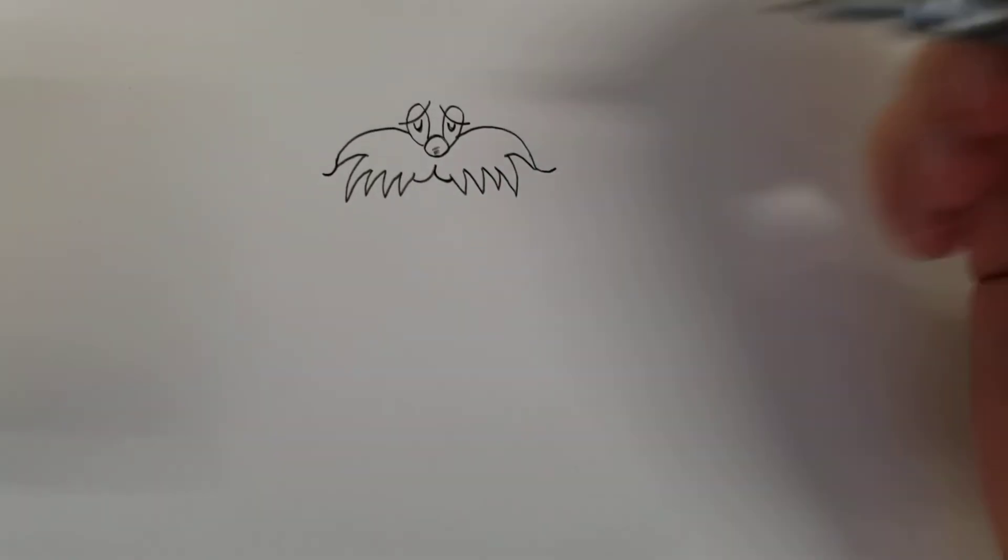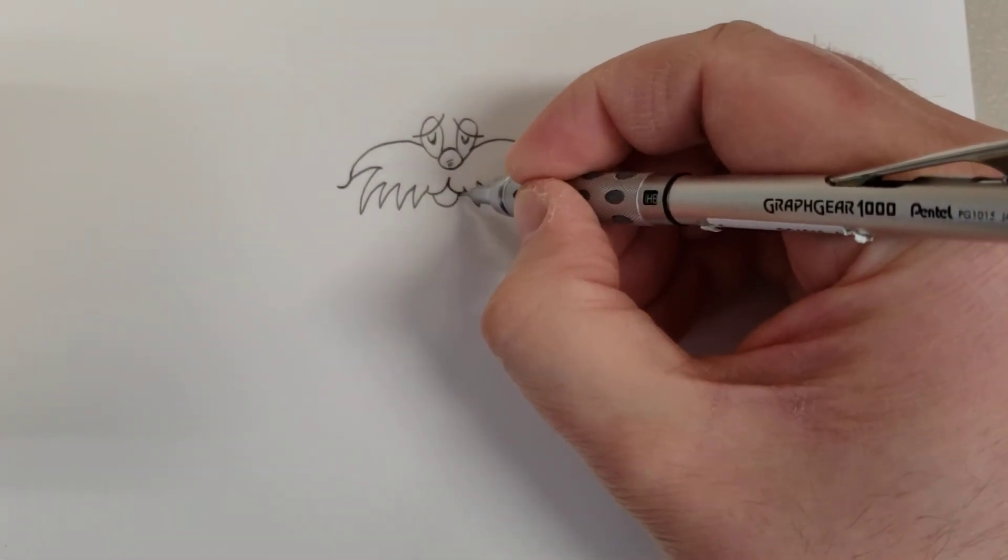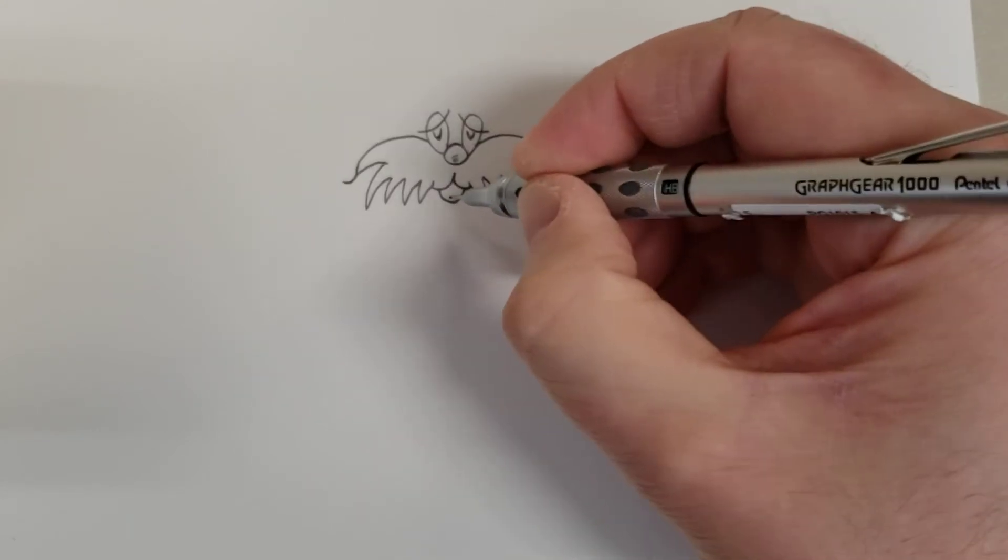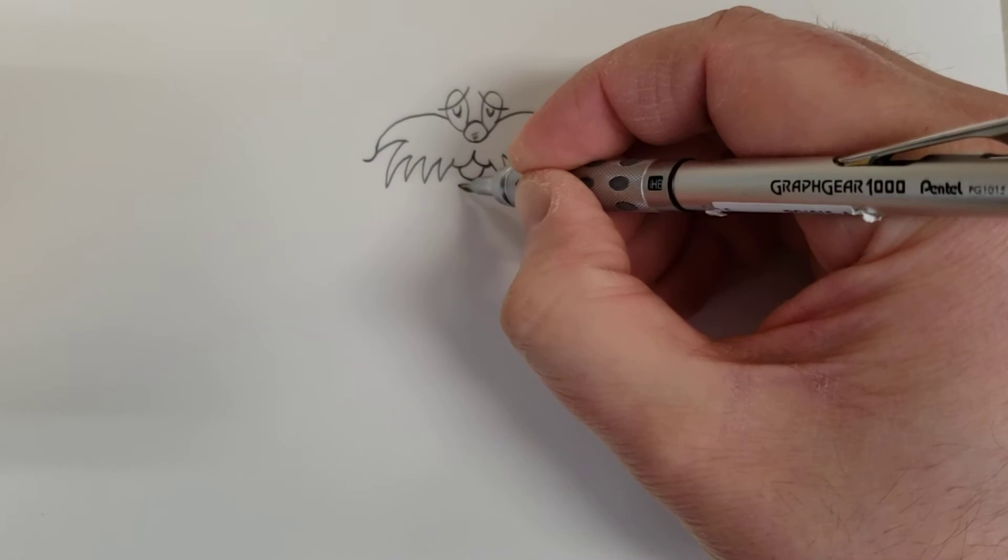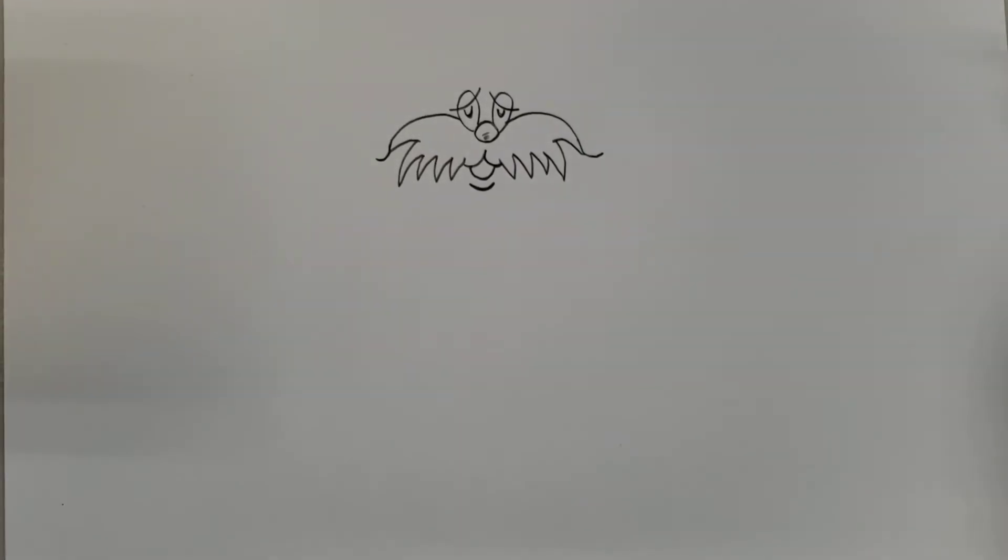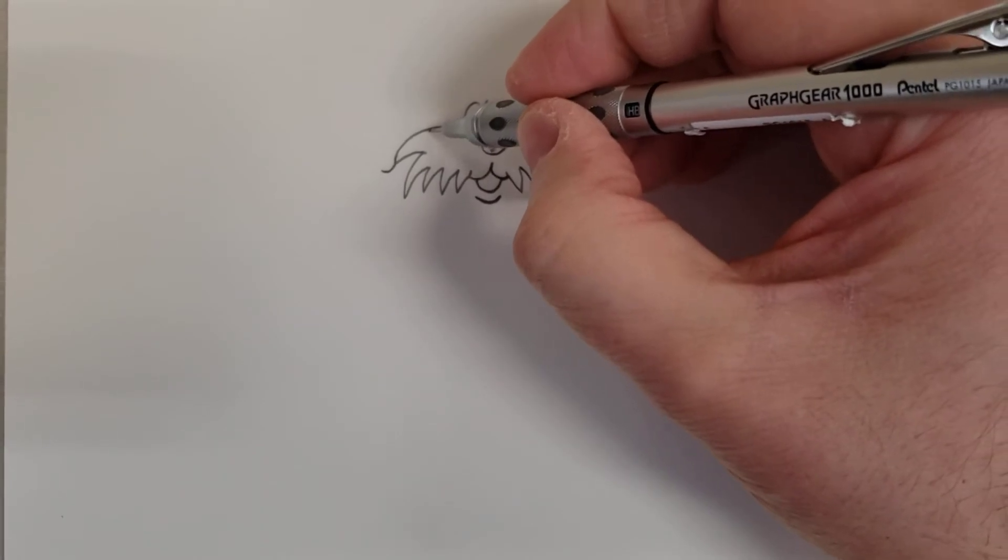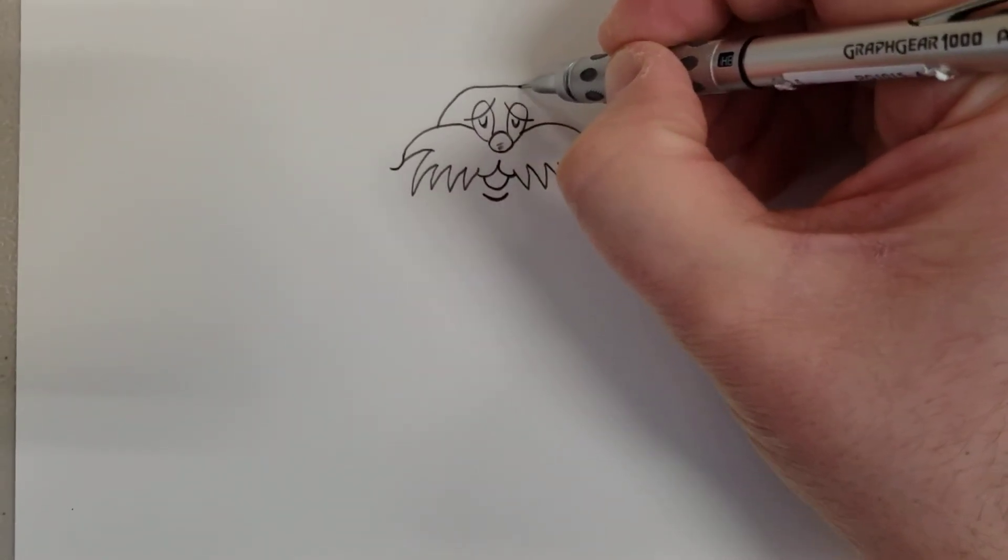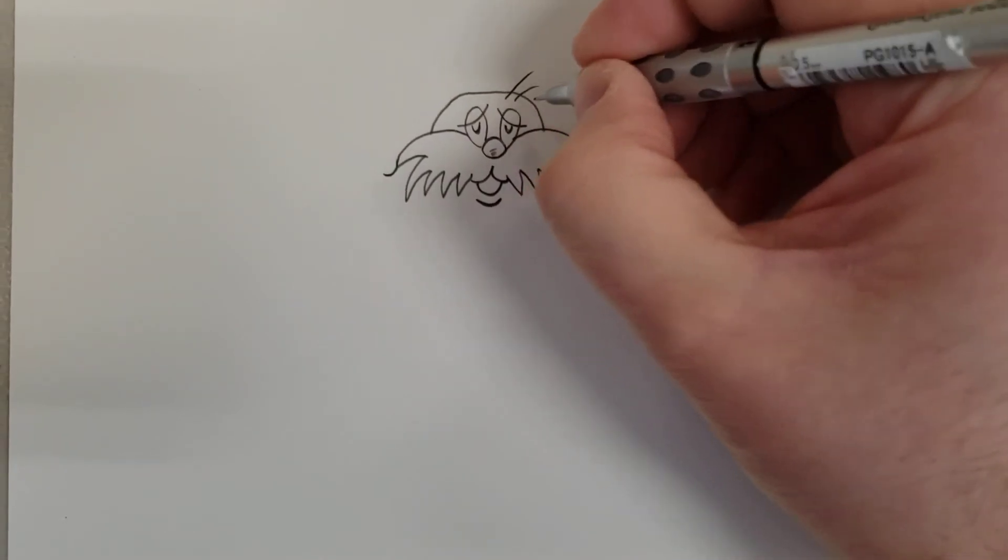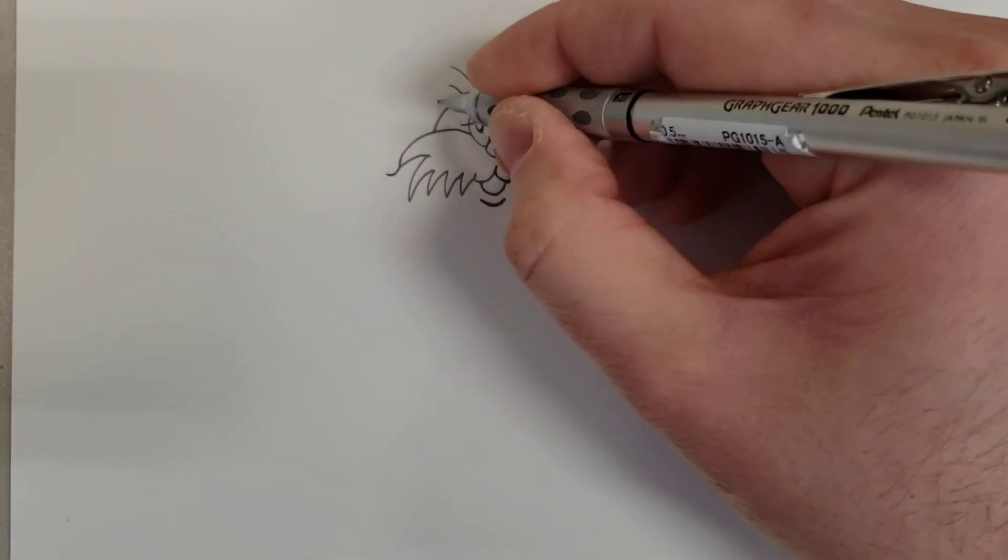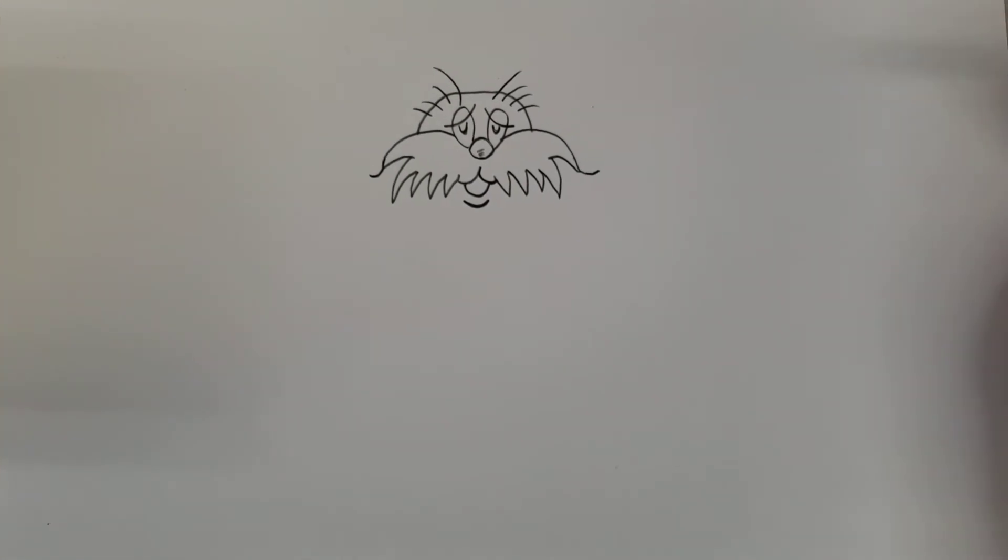Come down here for the mouth and a little line there. Then you're going to come up here and come up and over and back down. Then one, two, three, four on each side for the hair that's on his head. You can add more hair if you want.